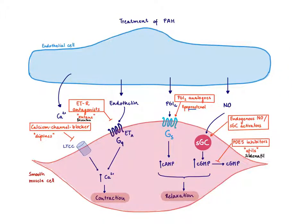Another option is to enhance the dilatory mediators. We can use analogs of prostacycline. All kinds of different prostaglandin analogs have 'prost' in their name. For example, epoprostenol can be used to enhance this pathway via cyclic AMP. We can also use endogenous nitric oxide.